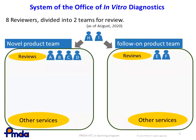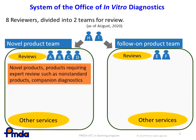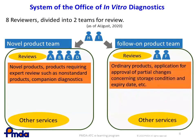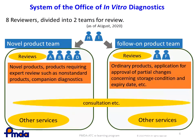The Office of In Vitro Diagnostics has two teams with eight reviewers in total. The novel product team reviews products such as new ones, or those that require an expert review. In the meantime, the follow-on product team reviews ordinary products and those with minor modifications such as changes in storage conditions or shelf life. These two teams communicate frequently and cooperate closely.